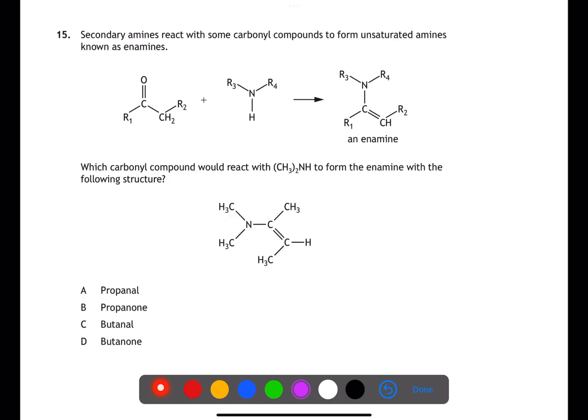For question 15 we need to compare the generic equation that we've been given to the product that we have. We can then label R1 to R4 on this molecule. On doing that we can then see that R3 and R4 are attached to the nitrogen so we can concentrate on the rest of the molecule. We can redraw out the product and put in R1 and R2. When we do this we can see that we have a molecule of butanone D.